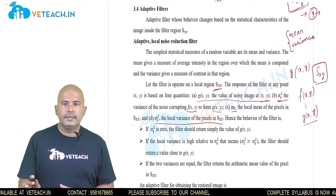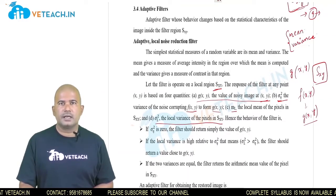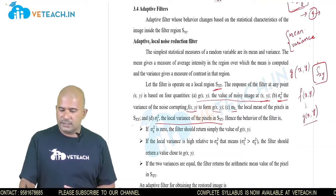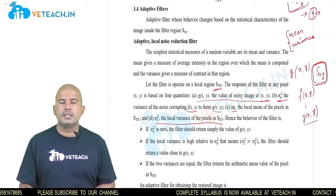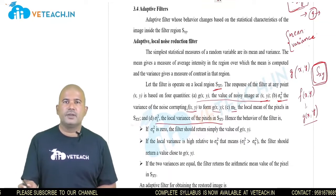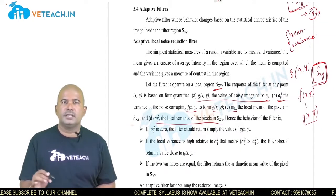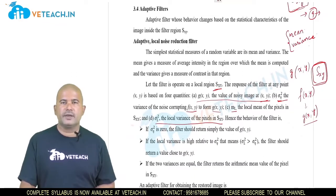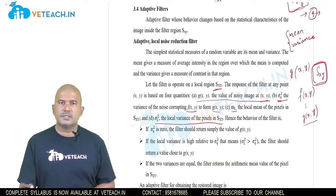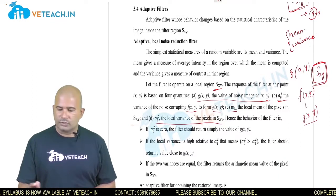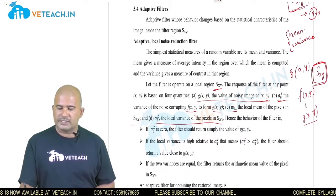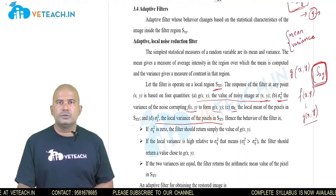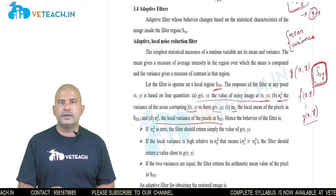In the earlier case — order statistic filters and normal filters — this procedure is not required. Simply for an average filter, the average of all pixel values in region s(x,y) is taken and the center pixel is replaced with that average. Similarly, minimum, maximum, and median filters all operate on a fixed region s(x,y) with fixed characteristics and fixed output. But in the adaptive case, the filter characteristics change depending upon the mean and variance of the pixel values in neighborhood s(x,y).